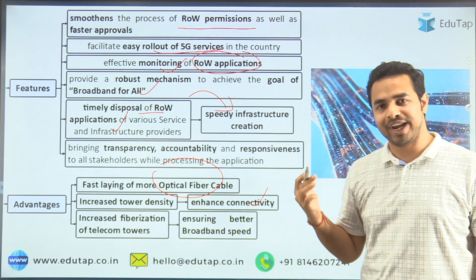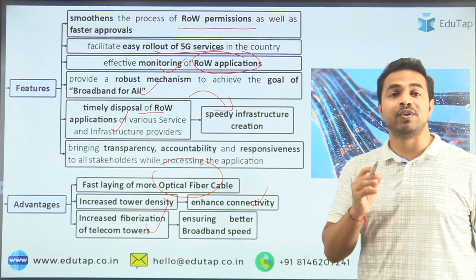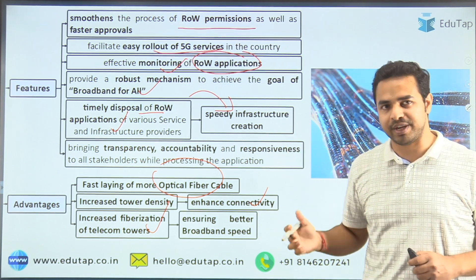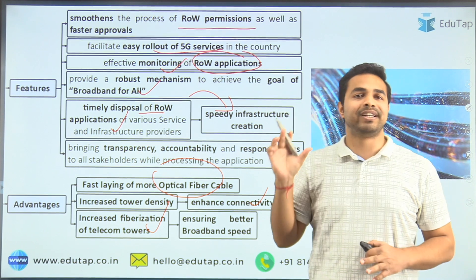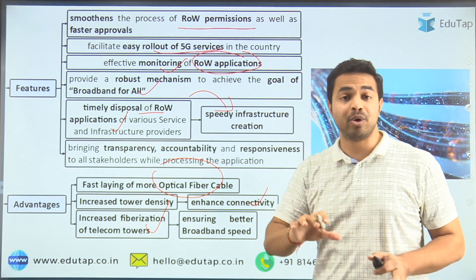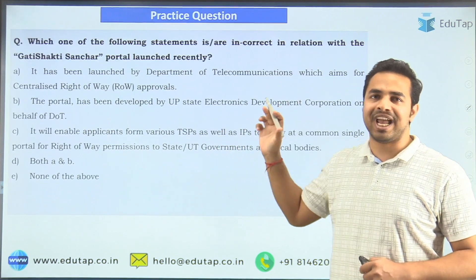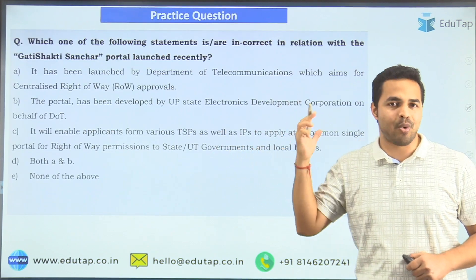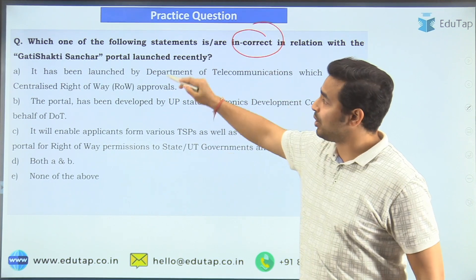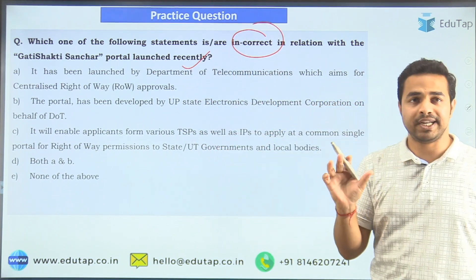Apart from that, it will also lead to increased fiberization of telecom towers, which will ensure better broadband speed in our country. These are all the important details required from an exam point of view about this particular portal. Now this is the practice question, in which you are required to identify the incorrect statement in relation to the Gati Shakti Sanchar portal, which was launched recently.